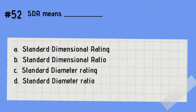Question 52: What does SDR stand for? A. Standard dimensional rating. B. Standard dimensional ratio. C. Standard diameter rating. D. Standard diameter ratio. The answer is B — standard dimensional ratio. SDR, or the standard dimension ratio, is a measurement and method often used by pipe manufacturers to rate the working pressure capacity of a pipe.